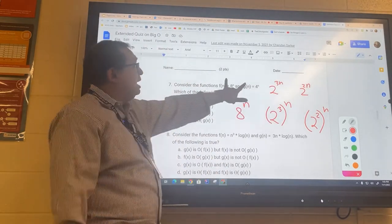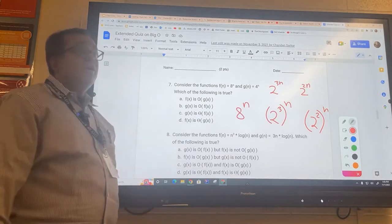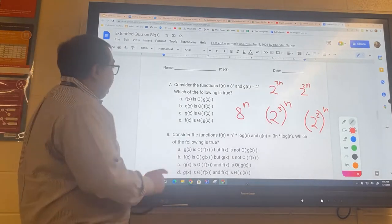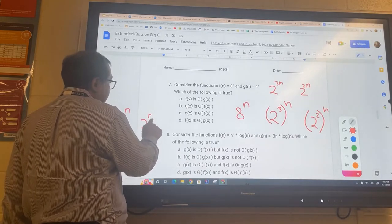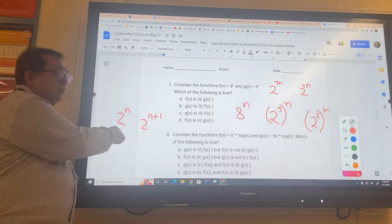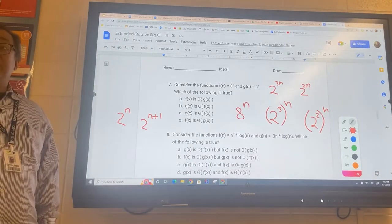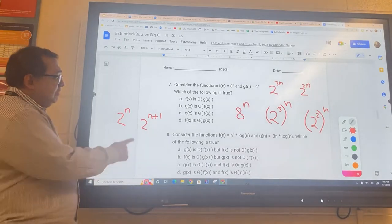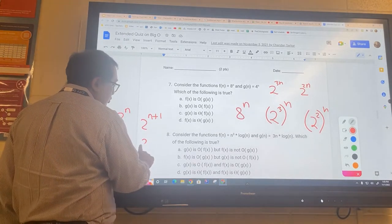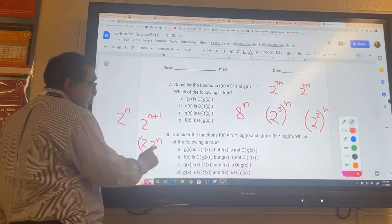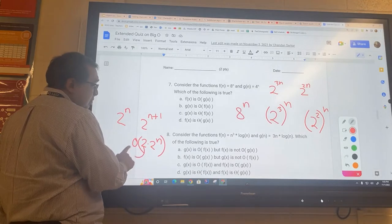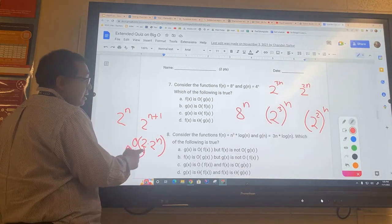By the way, if I have two to the n and I have two to the n plus one, do these two functions have the same Big O? They do. So here, for example, you can write this as two times two to the n, and then when I take the Big O of this thing, this two comes outside and goes away. And so now these two have the same Big O.